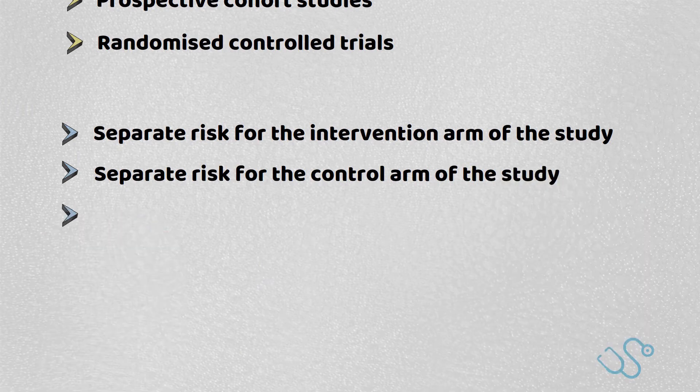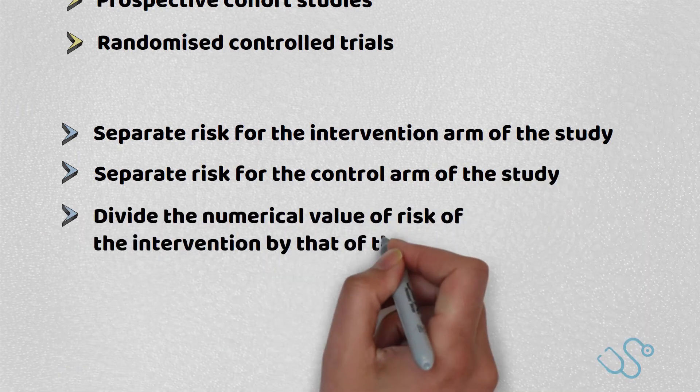To work out relative risk, you divide the numerical value of risk of the intervention by that of the control.